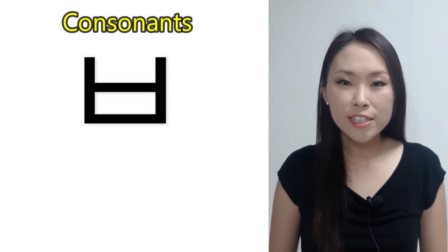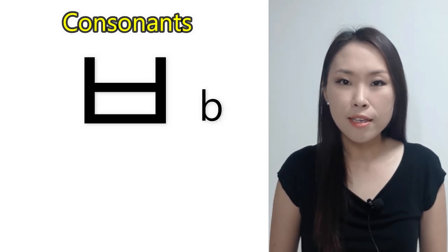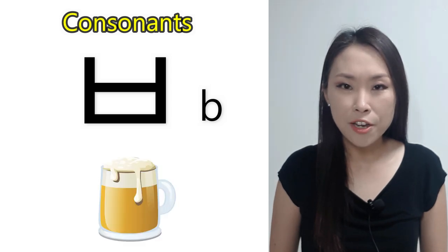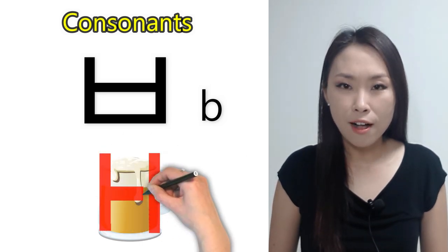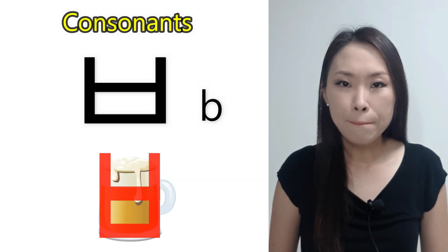The name of this consonant is ㅂ. The romanized letter for ㅂ is 'b'. ㅂ sounds like the letter 'b' in the word 'bus'. The shape of ㅂ in a cup looks like ㅂ.